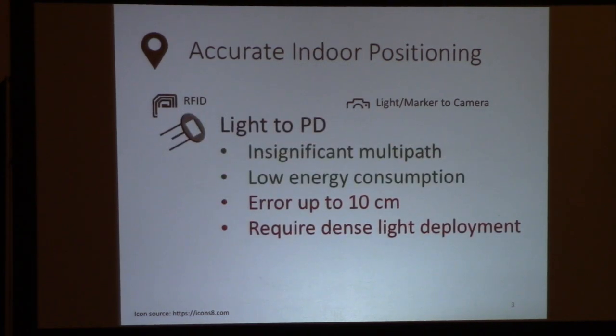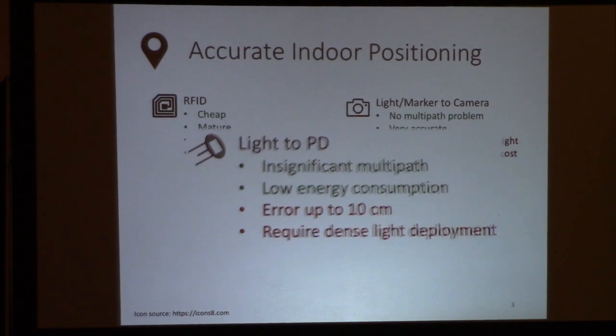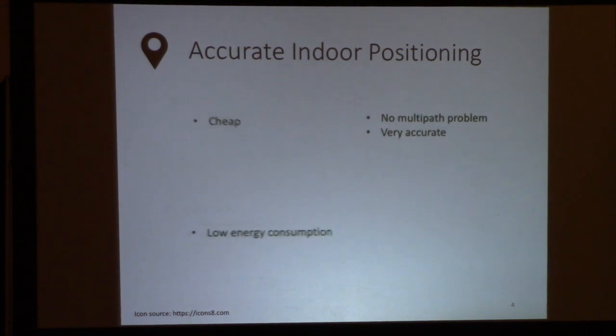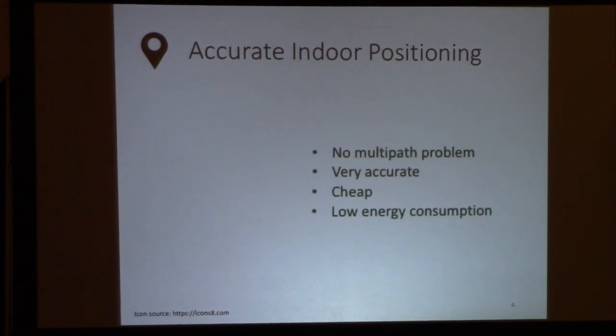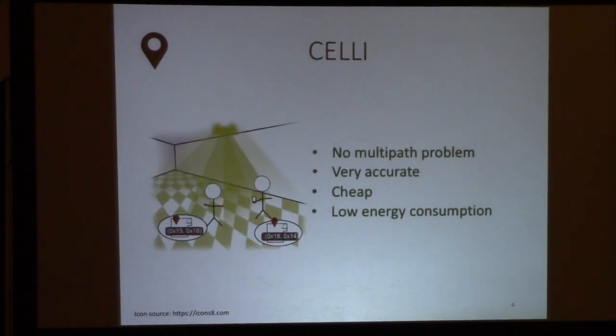The third system is light-based indoor positioning, which has low energy consumption. However, it often requires multiple anchors or line-of-sight deployment to achieve comparable accuracy. So the question is: can we have a positioning system that works in complex environments, is cost-effective with low energy consumption, and at the same time provides high accuracy? That would be very nice.